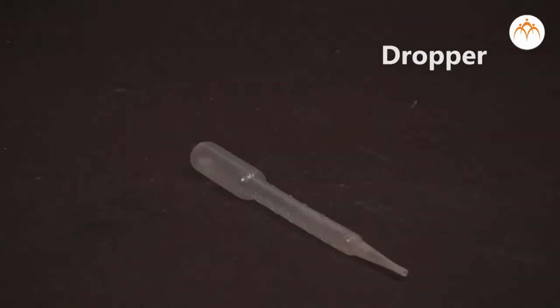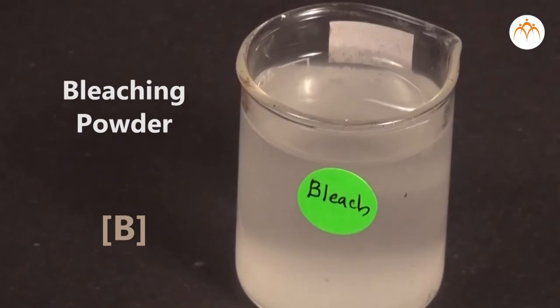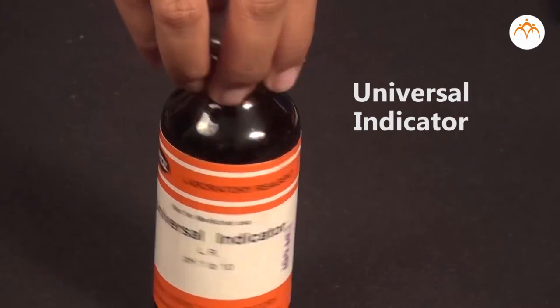test tube stand, dropper, etc. We also need sodium carbonate, bleaching powder, lemon juice, and indicators like litmus paper, universal indicator, etc.